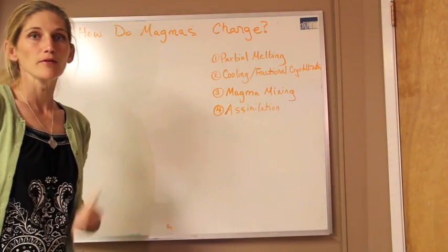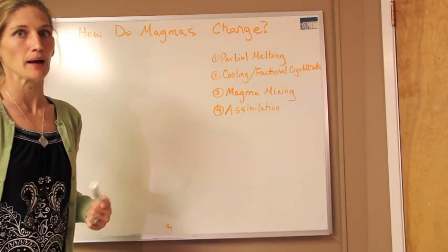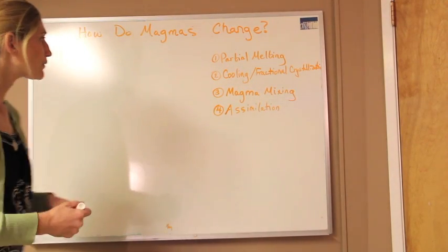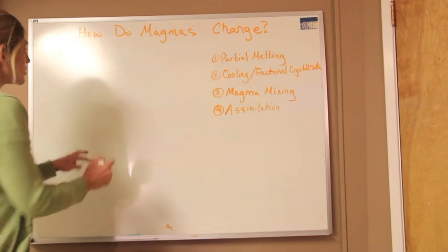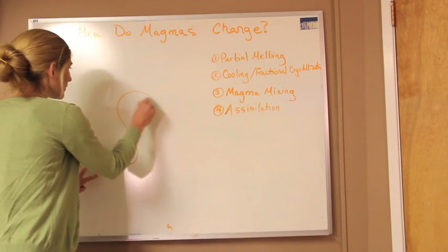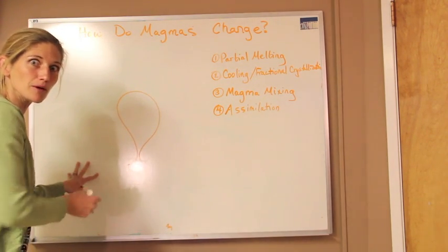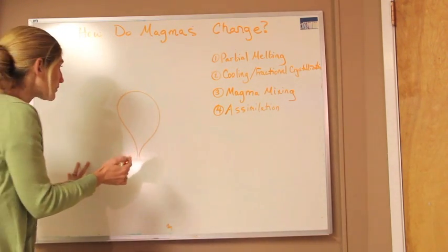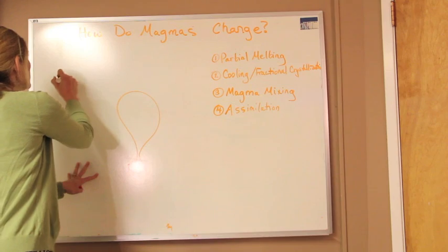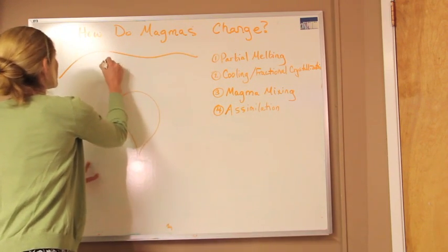I'm going to very quickly talk about four different processes that cause magmas to change over time. So if we have a magma, I'm going to draw a nice lovely little diapir blob of magma rising up through some surrounding rock.